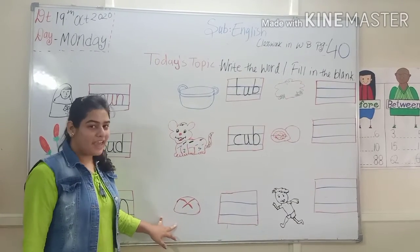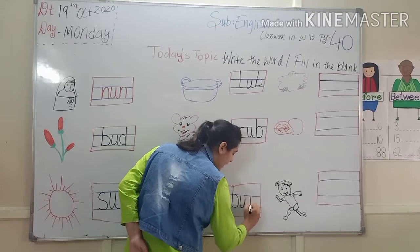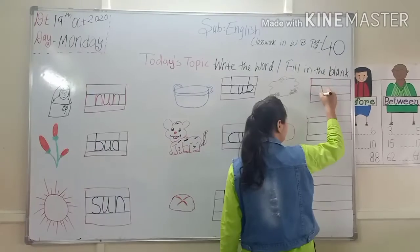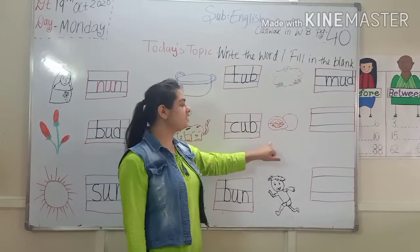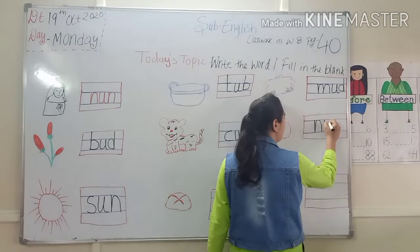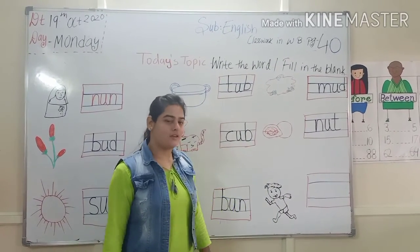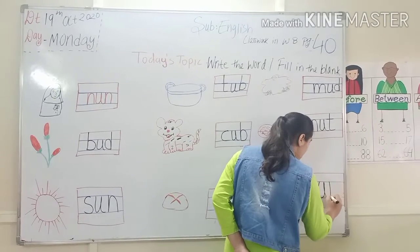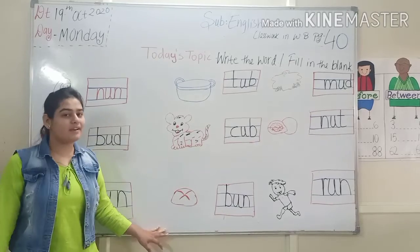Now next, kids — what is this? Yes, it's bun. B-U-N. Bun. Okay. Now next, kids — mud. M-U-D. Mud. Now kids, next — what is this? Yes, it's nut. N-U-T. Nut. Okay. Now next, kids — what is this? Yes, run. Spelling of run: R-U-N. Run.